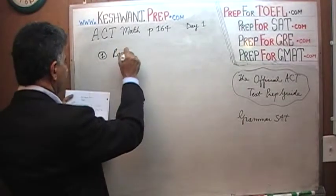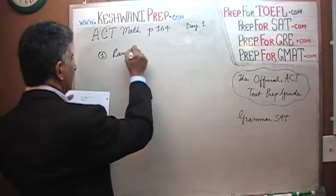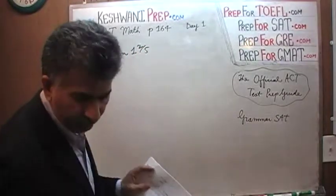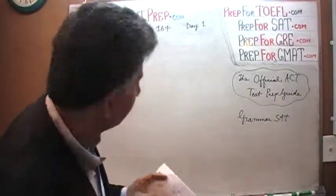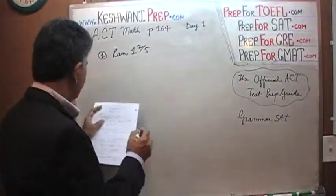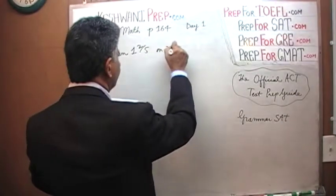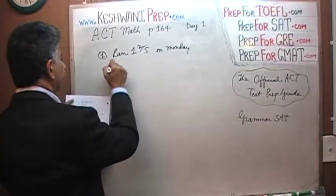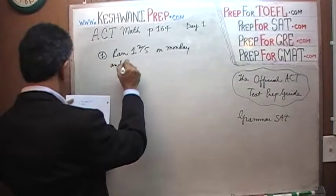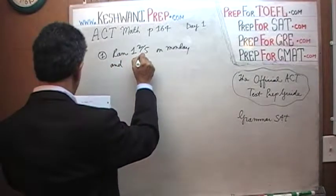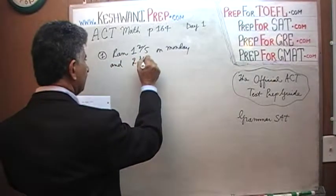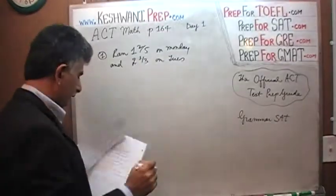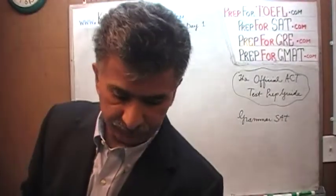It says that Kaya ran 1 and 2/5 miles on Monday, and then she ran 2 and 1/3 miles on Tuesday. The question simply is: what is the total of these two figures?